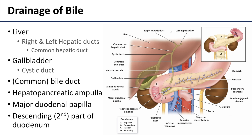Bile is produced in the liver and that bile is drained from the liver through the hepatic ducts. There's a right and a left hepatic duct. These hepatic ducts unite to form the common hepatic duct, which can conduct bile down to the cystic duct where it can be stored for later release by the gallbladder.